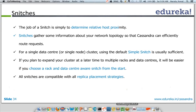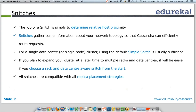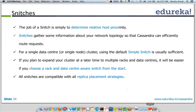The job of a snitch is simply to determine relative host proximity. If a node has three options to copy the replica and wants to know which host to prefer data from, it will call a particular snitch to see which host is relatively nearer.